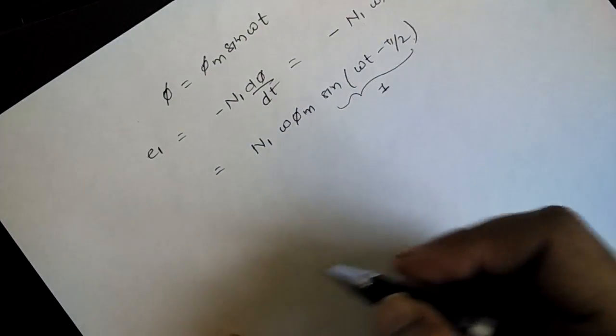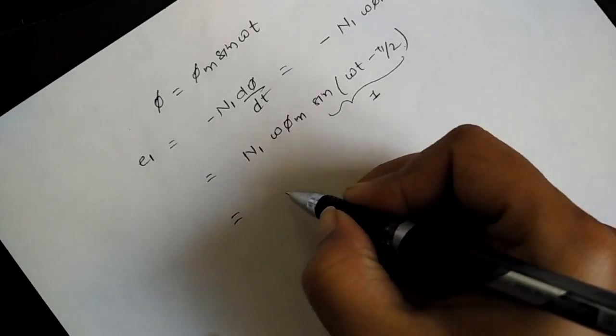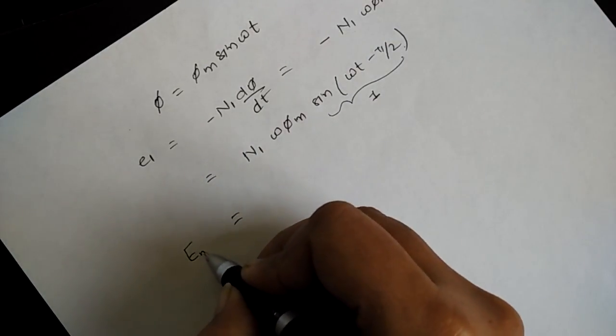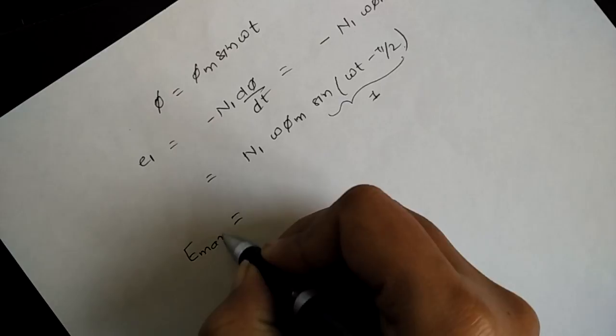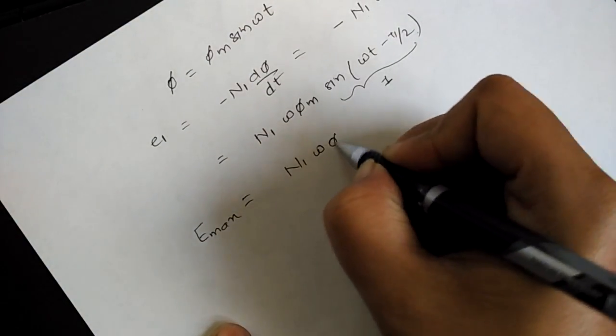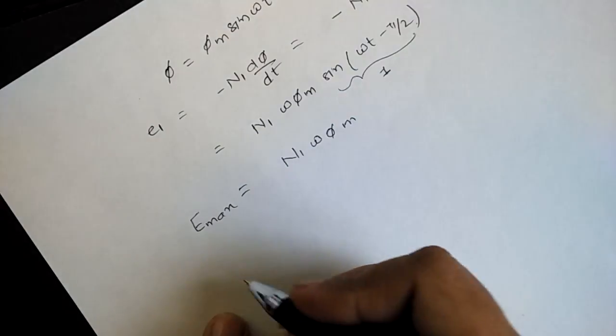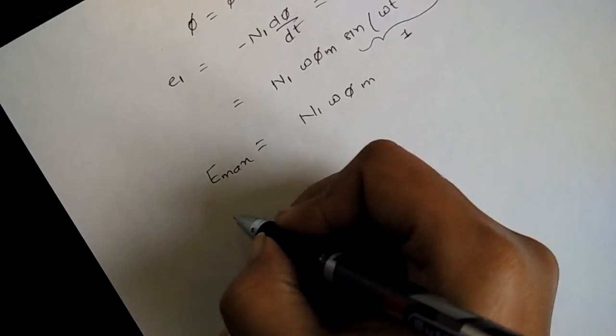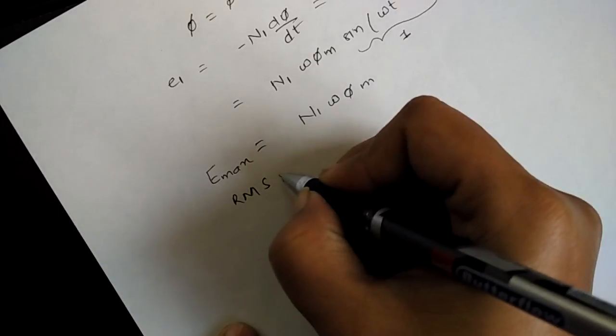So here you can write the maximum value E_max as n1 omega into phi_m. This is the maximum value.